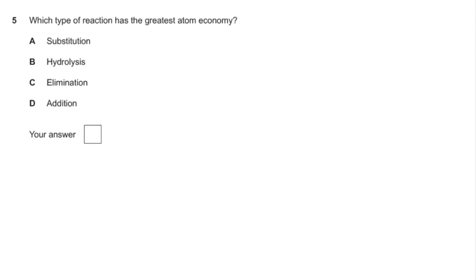Question five. The thing to remember in this one is that any waste products are going to lower your atom economy. And addition reactions is where two reactants become one product. So in other words, all of your reactant atoms go into making the product. There's nothing else made, and so the answer must be D.